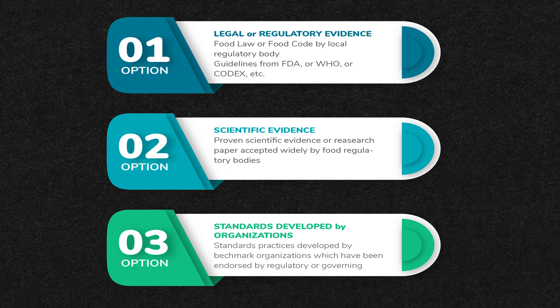Just to summarize: in validation, what we are doing is taking the critical limits we have established for our critical control points and validating them against scientific or legal evidence. This gives our HACCP an international presence — confirming that our approach is correct and that our critical limits will in fact control the health of the customer and keep our food safe.